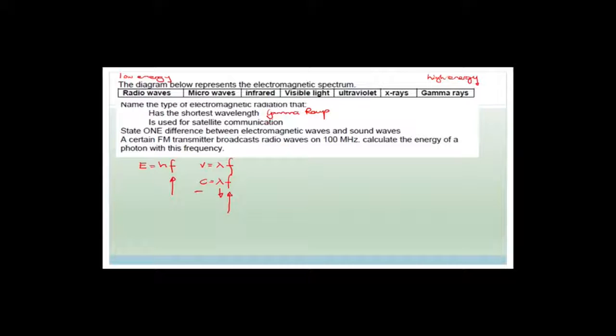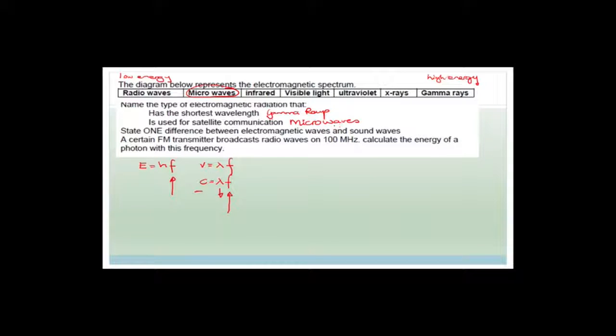The radiation used for satellite communication is microwaves. That is something you have to learn — microwaves are used for satellite communication. Just because there are appliances in our kitchen that we call microwaves, which use microwaves to heat water in food, doesn't mean there aren't other uses for microwaves.